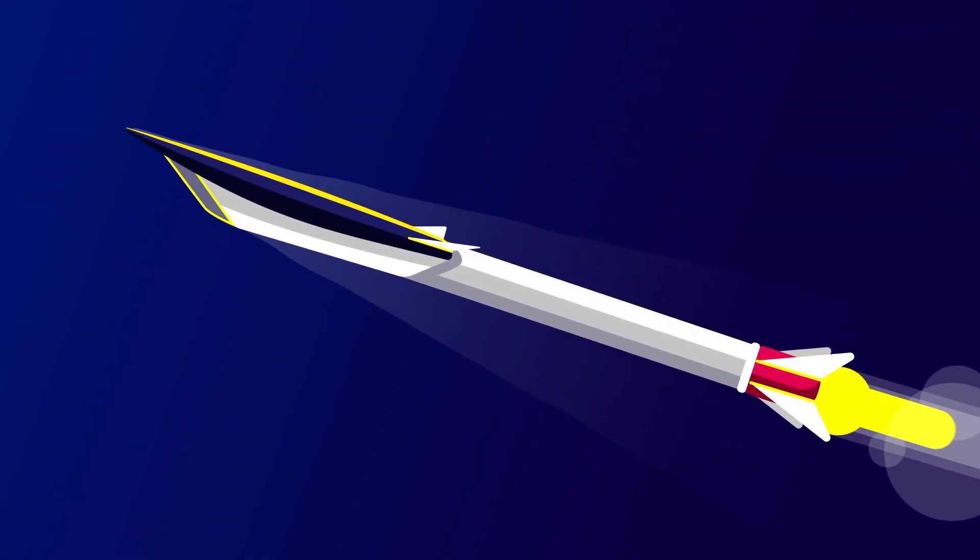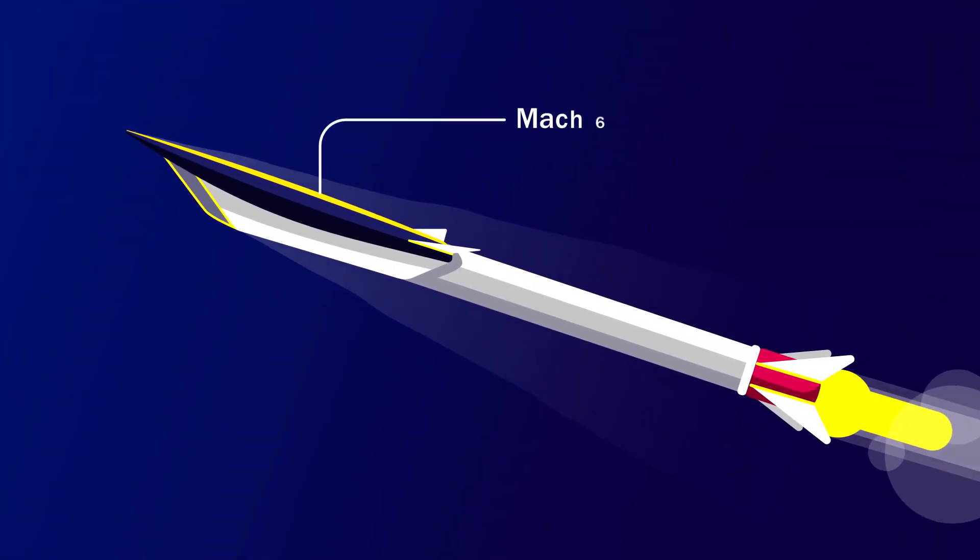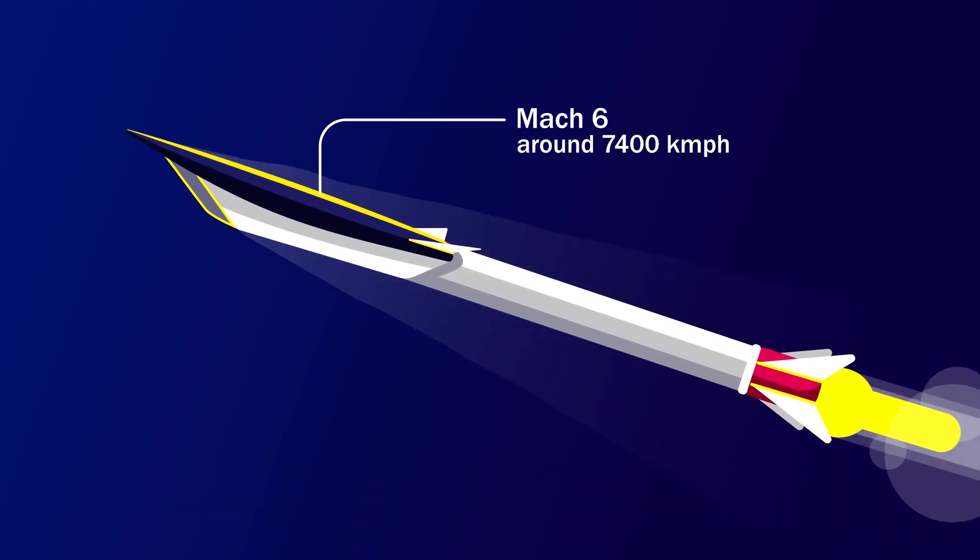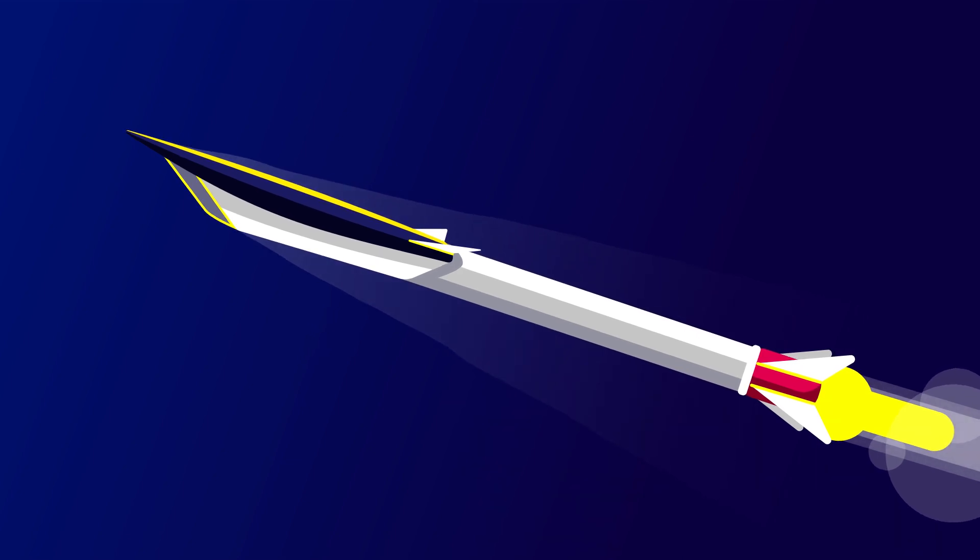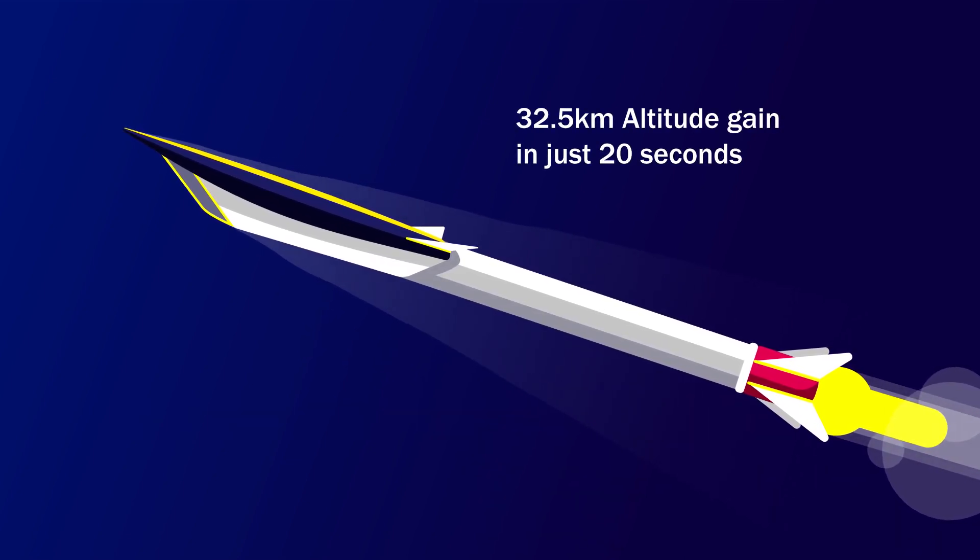The HSTDV tested by India reached a top speed of Mach 6. This is around 7,400 km per hour, which is six times the speed of sound. It was able to move up to an altitude of 32.5 km in just 20 seconds.